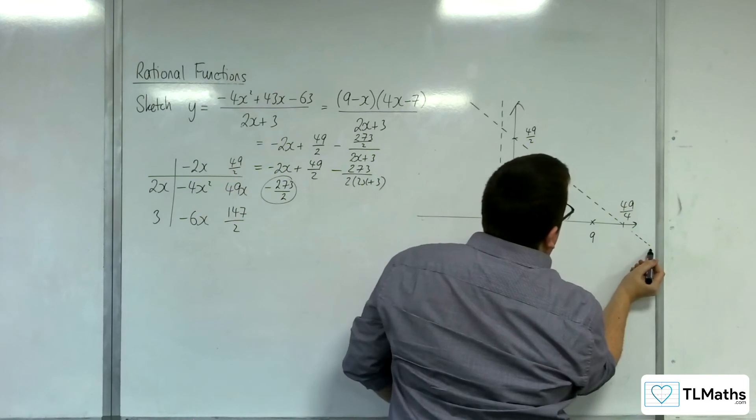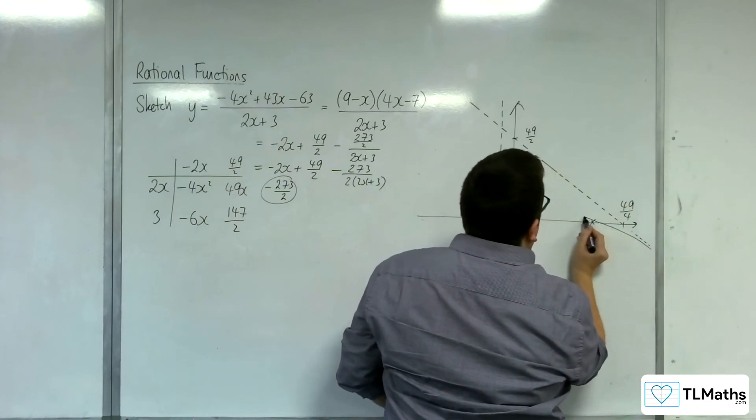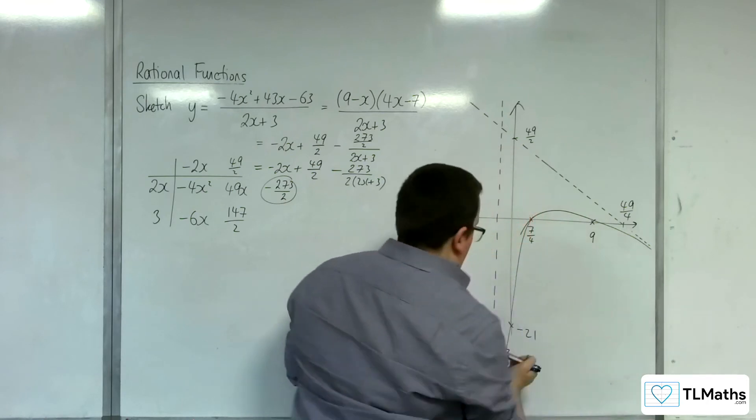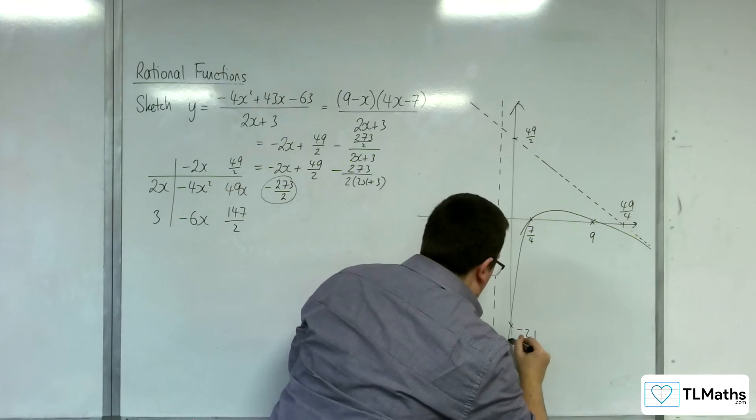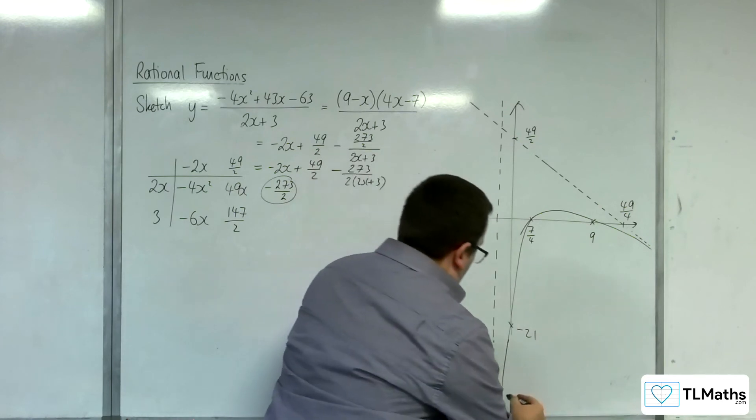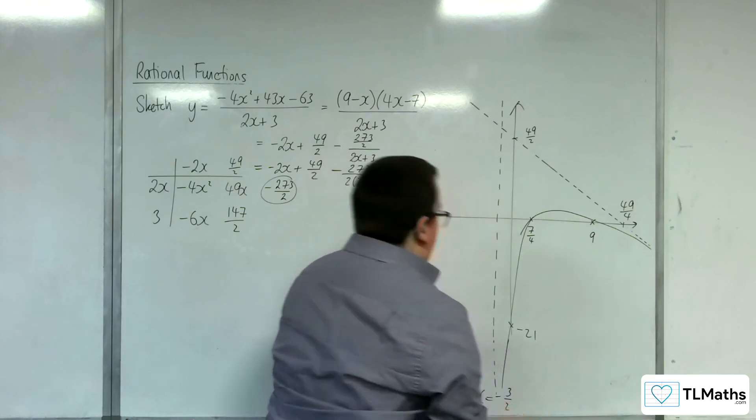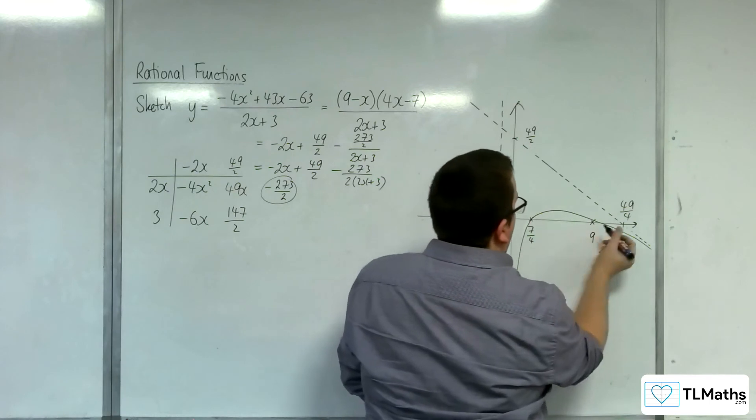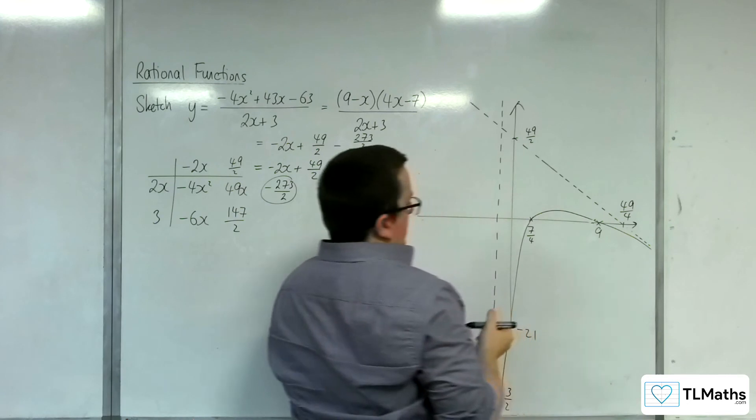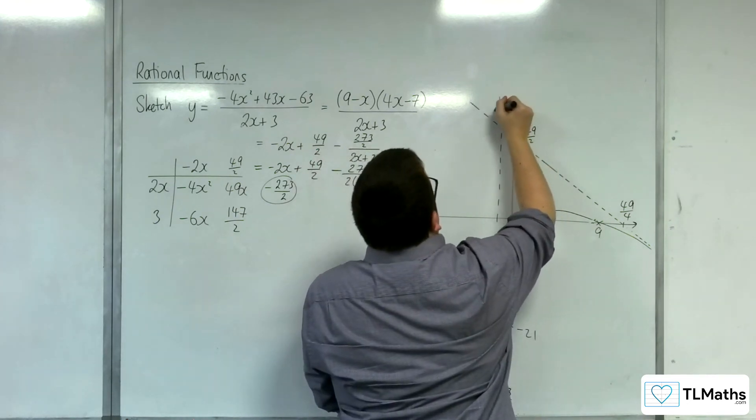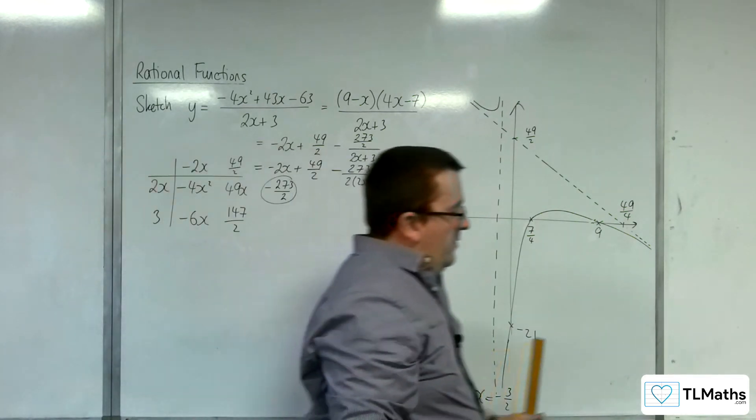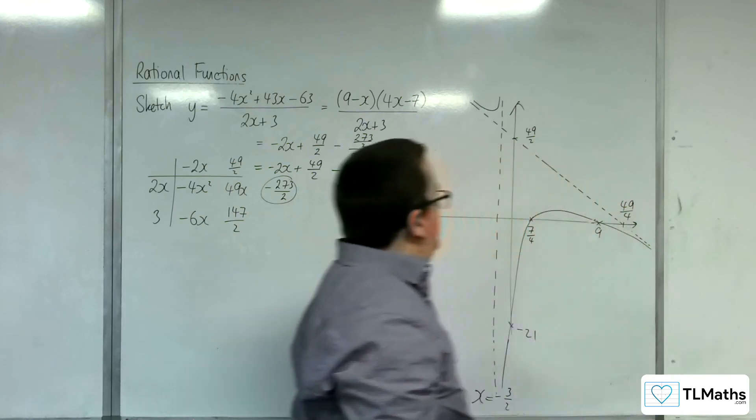Right, so then you can see that the curve must do something like this in order to then tend towards, what was that, minus 3 halves. That's a bit better. And then our curve must do something like that up at that point. OK, so that is what our curve must look like.